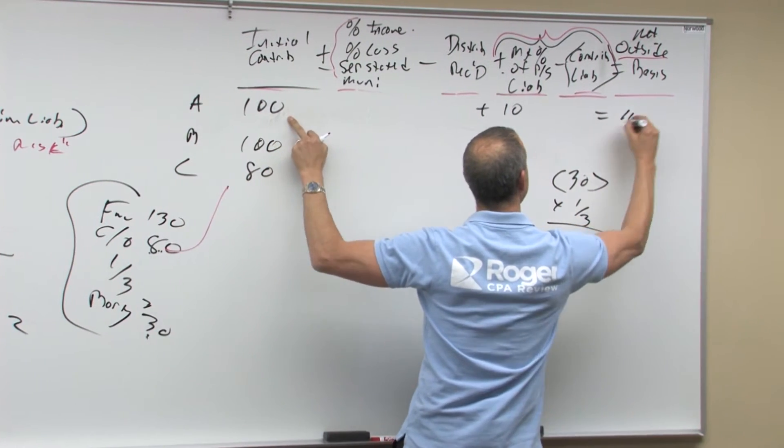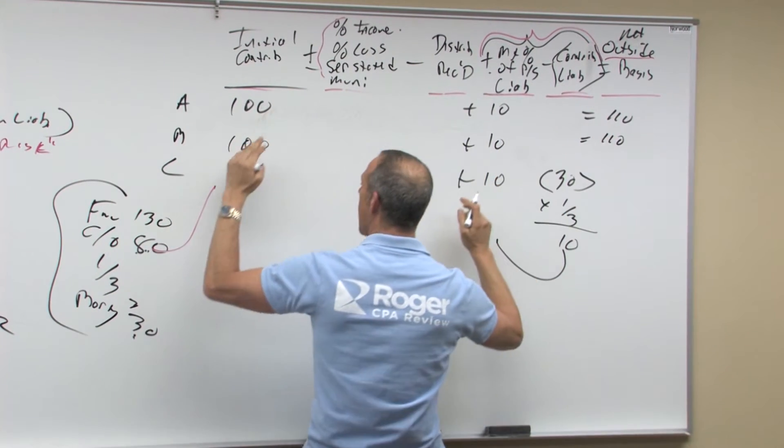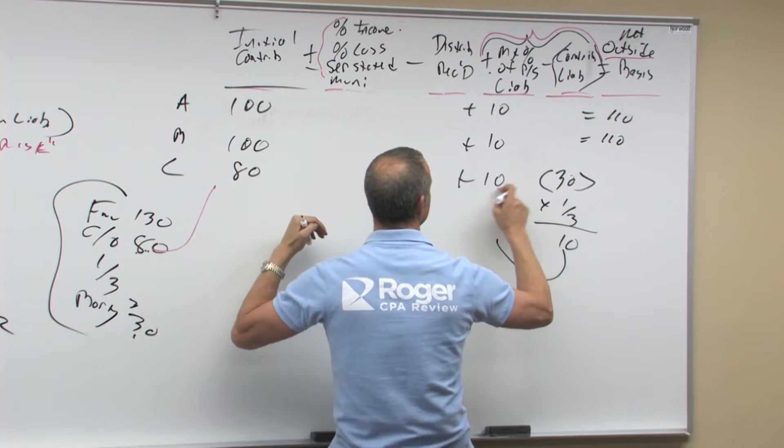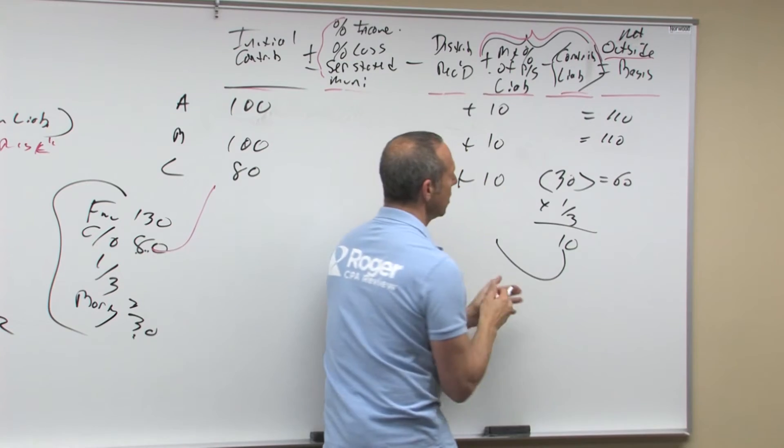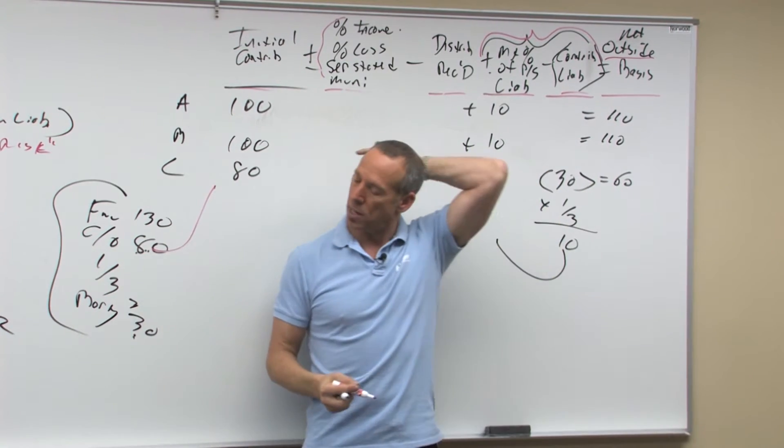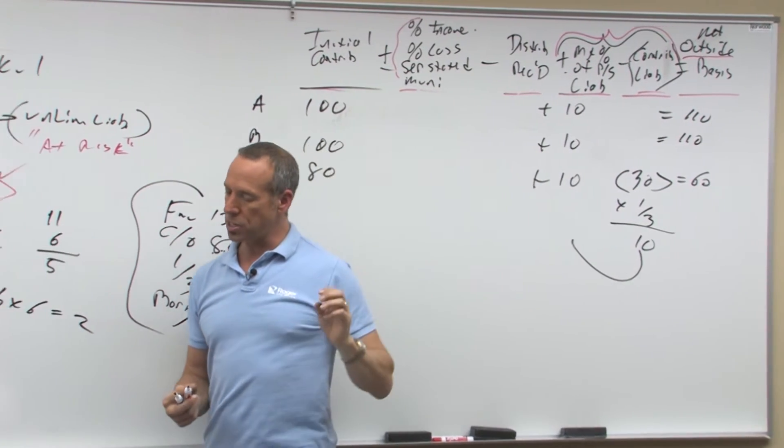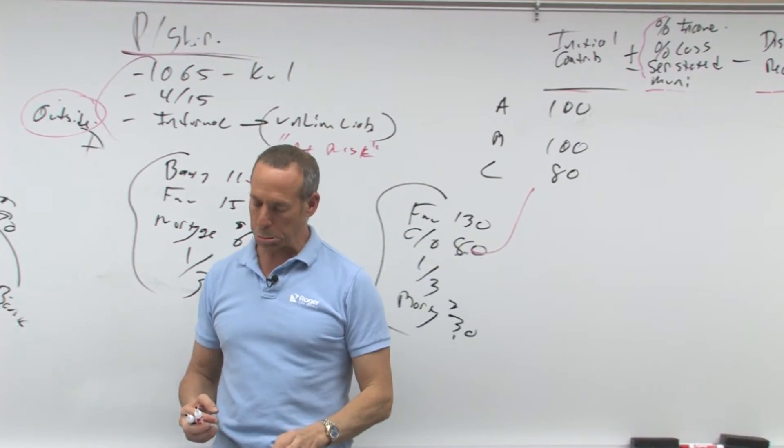So, he ends up with what? 110. He ends up with 110. I end up with 80 minus 30 is 50, plus 10 is 60. So 110, 110, and 60, that would be your ending numbers, which you'll see there in that box.